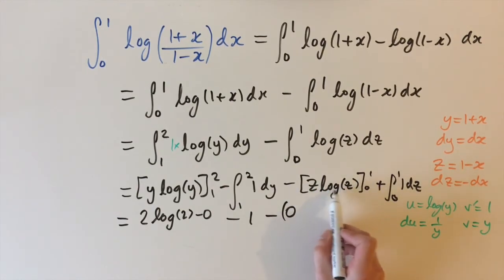Log of 0 is kind of minus infinity it's not really defined but 0 times anything is 0 and this is going to outweigh the log of 0. So this is actually going to be minus 0 as well. So this whole term here is 0.